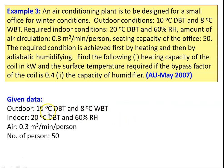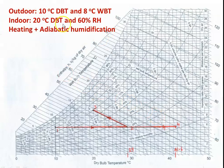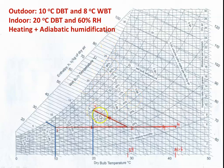Write down the given data. Outdoor condition: 10°C dry bulb, 8°C wet bulb. Indoor condition: 20°C dry bulb, 60% relative humidity. Air quantity: 0.3 m³/min per person, 50 persons. On the psychrometric chart, locate the initial (outdoor) and final (indoor) points. The process is achieved by heating then adiabatic humidification. For adiabatic humidification, enthalpy is constant.